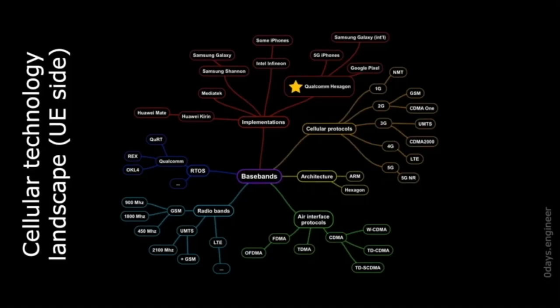Let's start from the top-level overview of cellular technology. This mind map presents a simplified view of various types of entities we have to deal with in basebands. It's not a complete diagram — it only presents classes of entities that exist in this space. This mind map is specific to client-side equipment, the user equipment, and completely omits any server-side considerations.